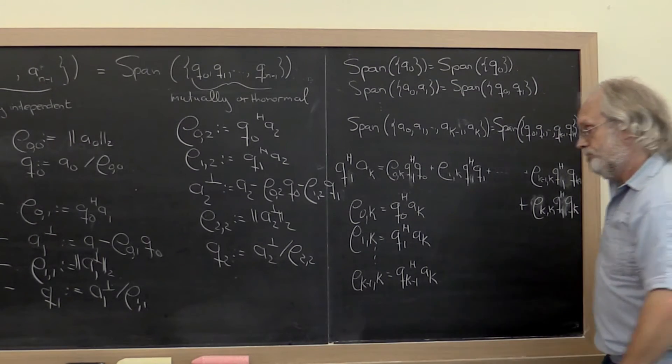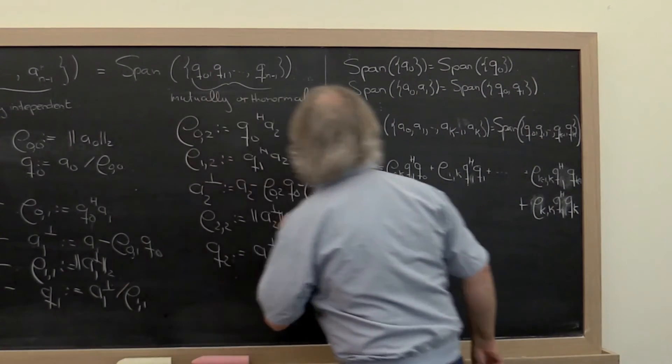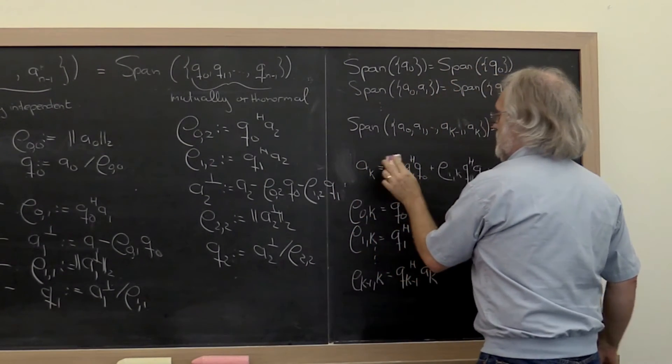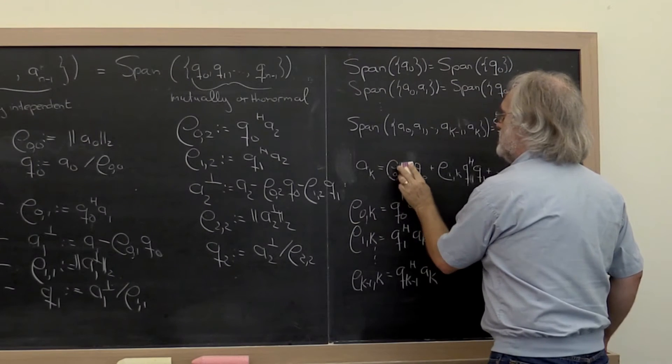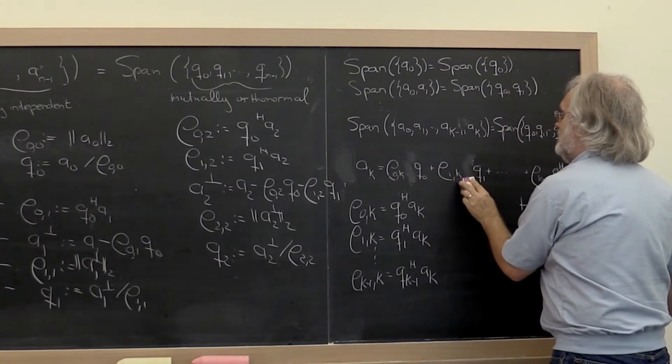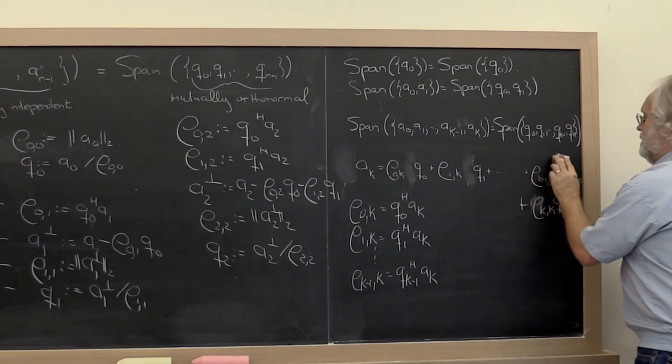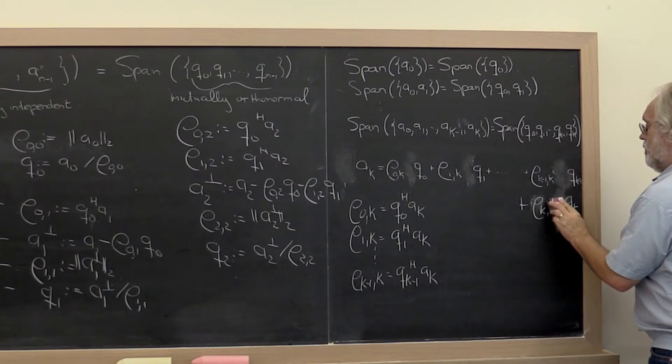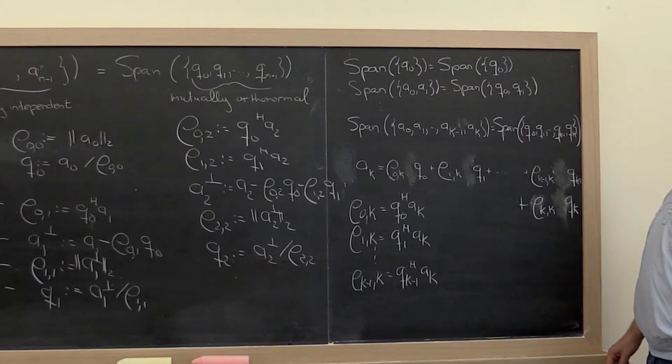Right? Now we can go back and say, let's go back to how Ak was given as a linear combination of the vectors Q0 through Qk. So we're back here.